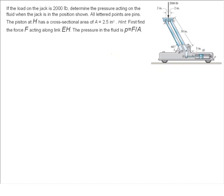If the load on the jack is 2,000 pounds, determine the pressure acting on the fluid when the jack is in the position shown. This might confuse you at first because it's asking for pressure, and we haven't really talked about pressure at all in this class, but you have learned about pressure in your previous classes and in physics, and you know that pressure is equal to force over area.